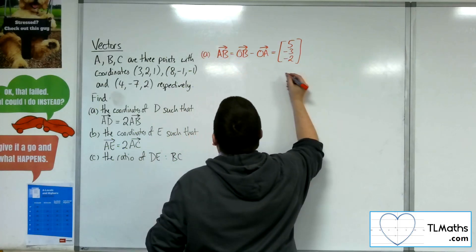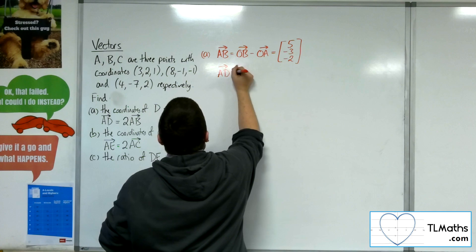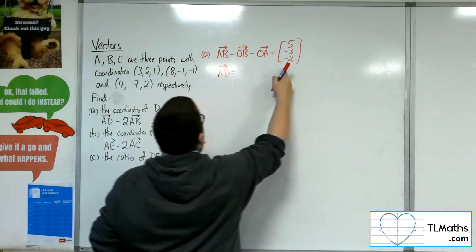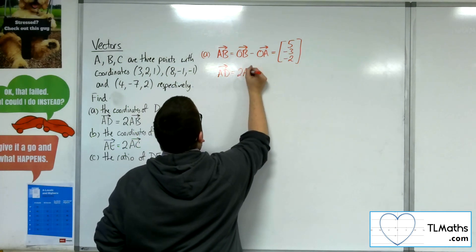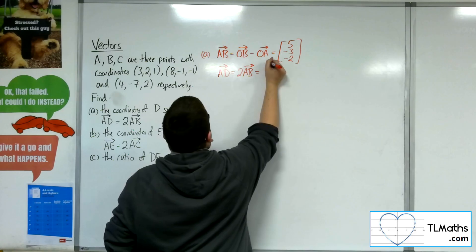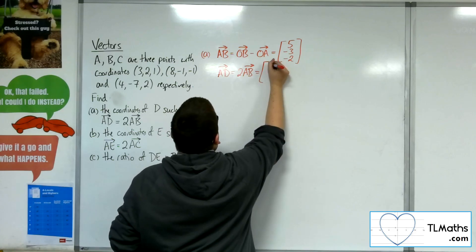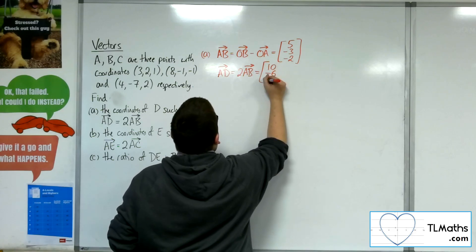So AD will be two lots of AB. And so AD will have the vector 10 minus 6 minus 4.